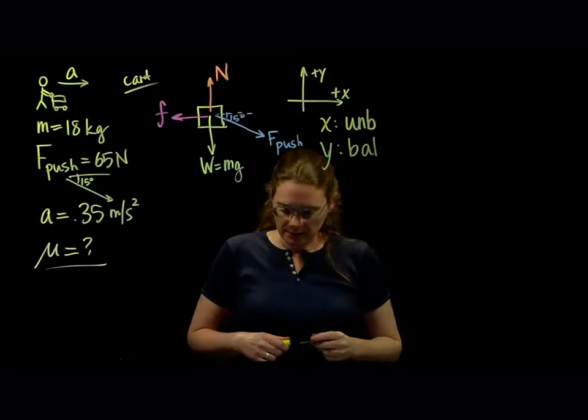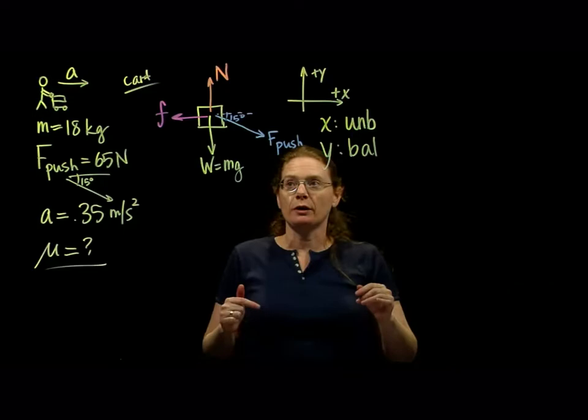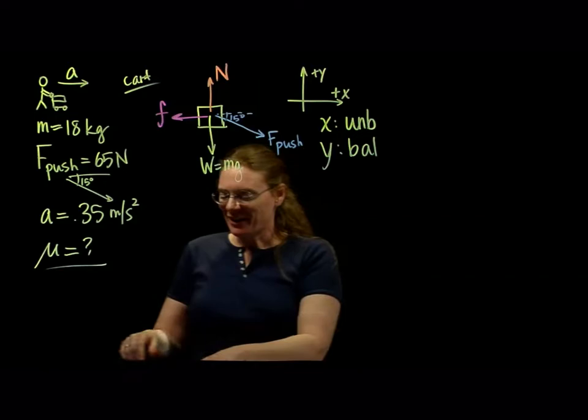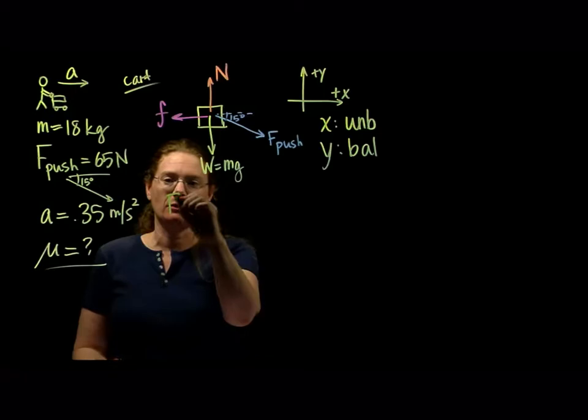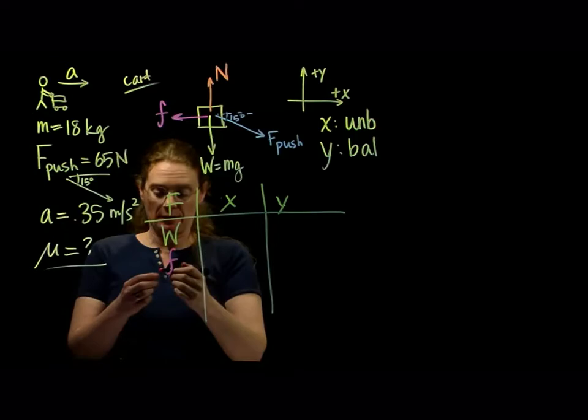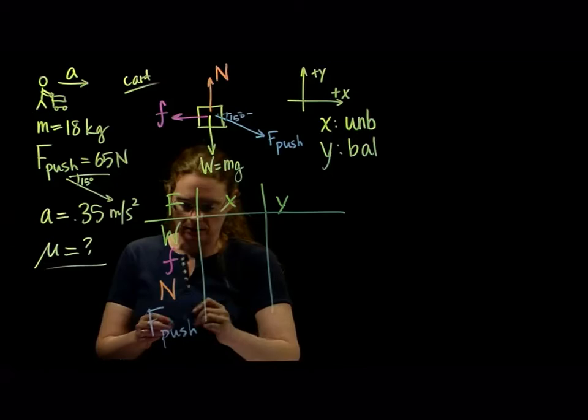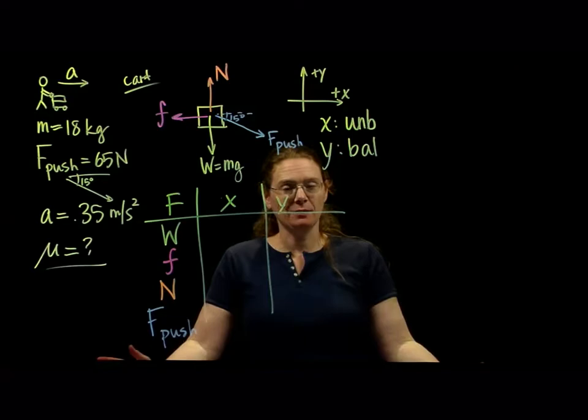Now we are setting up a force table. We have four forces, and we're going to break them up into the x parts and the y parts, because just like with projectile motion, we have to treat horizontal and vertical separately. So we're going to do a chart of our forces — the force, what is the x component, what is the y component — with weight, friction, normal, and the push.